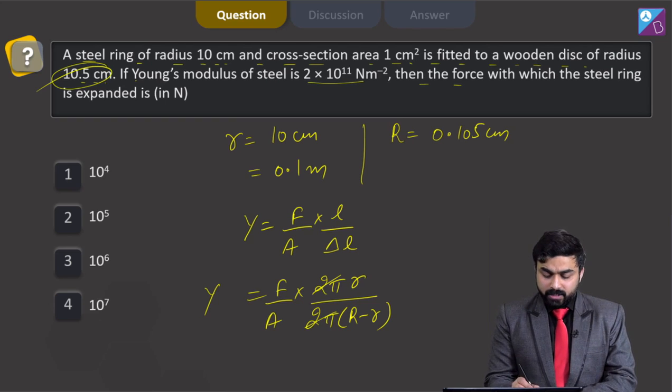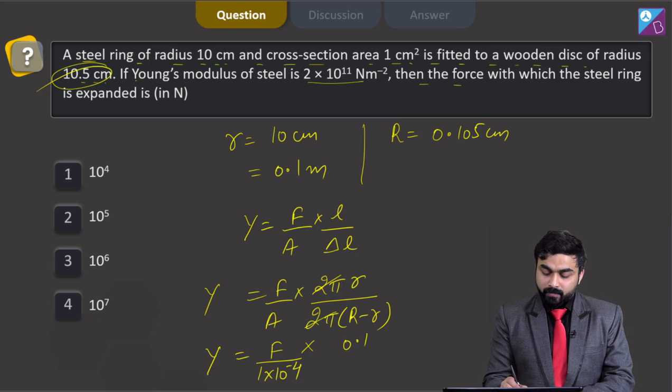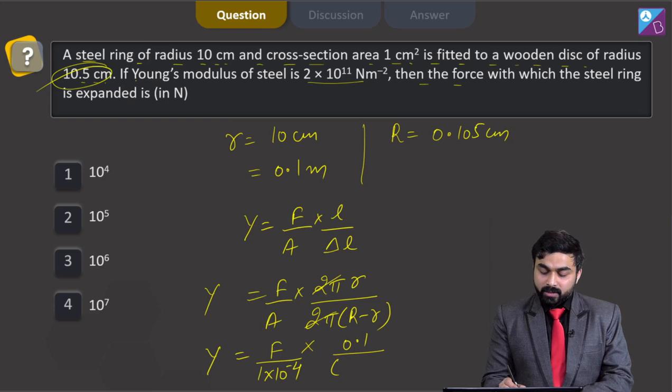Now students, this Young modulus can be written as F over area. Area is 1 centimeter square, so this I can write 1 into 10 to the power minus 4 meter square. The result is 10 to the power 6 Newton.